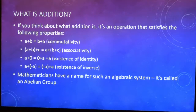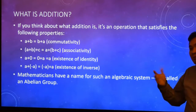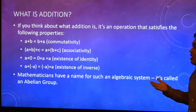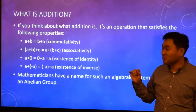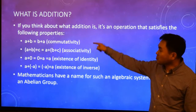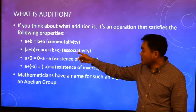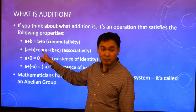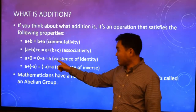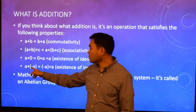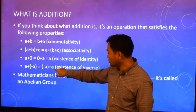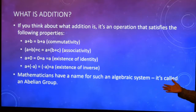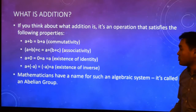Let's think about what addition really is. The success of RSA was that we had a new system with a different meaning of addition and multiplication. Mathematicians noticed that any operation can be thought of as addition if it satisfies four properties: commutativity (2+3 = 3+2), associativity (adding in any order gives the same result), an additive identity zero (adding zero changes nothing), and existence of inverses (for any A, there's a negative A such that A plus negative A equals zero). This structure is called an abelian group.